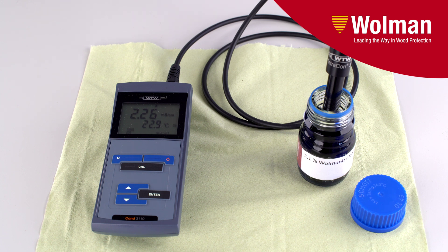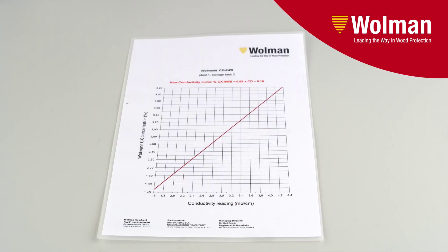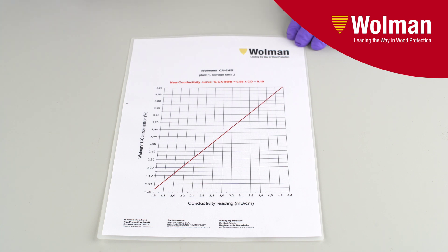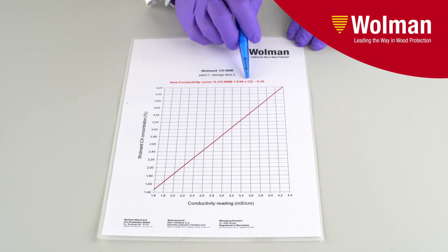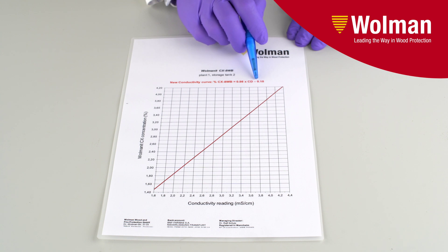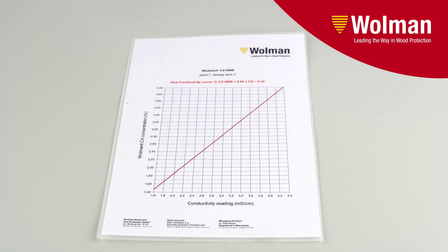With this value, we can estimate the concentration of the working solution. Each customer receives an individual conductivity curve, along with a formula for calculating the concentration. If we use 2.26 millisiemens per centimeter from the previous reading, we can use the formula: 0.98 times 2.26 minus 0.10. We could estimate that the concentration of the working solution is roughly 2.1 percent.